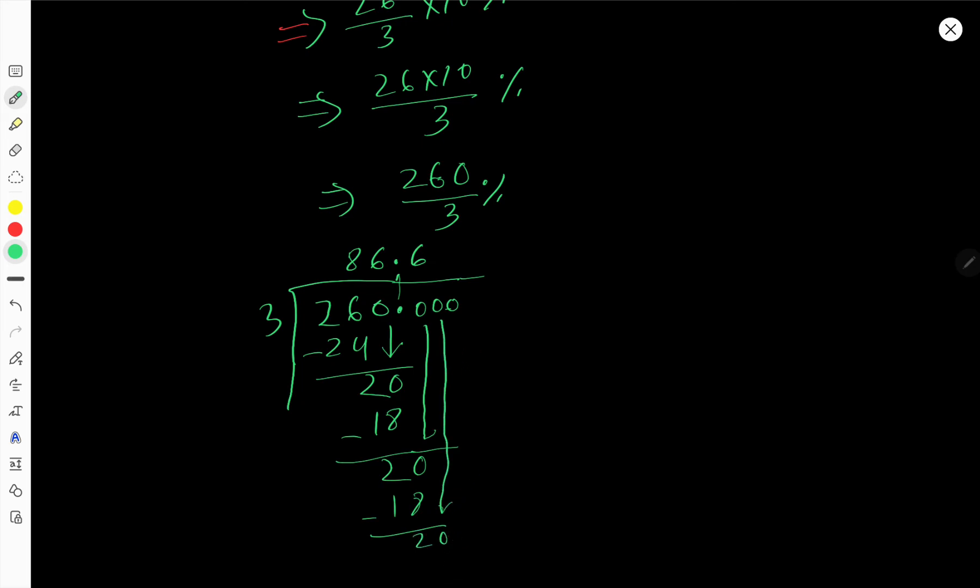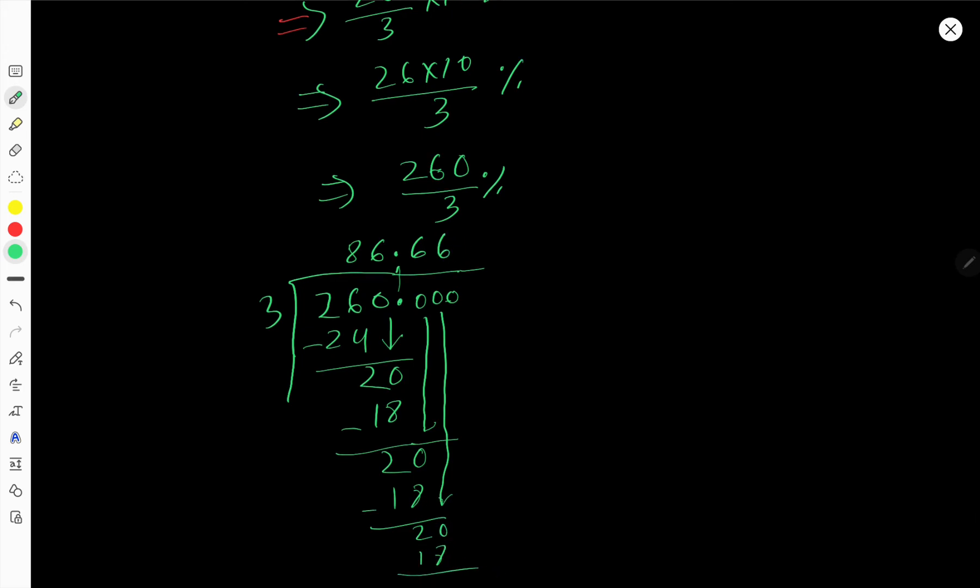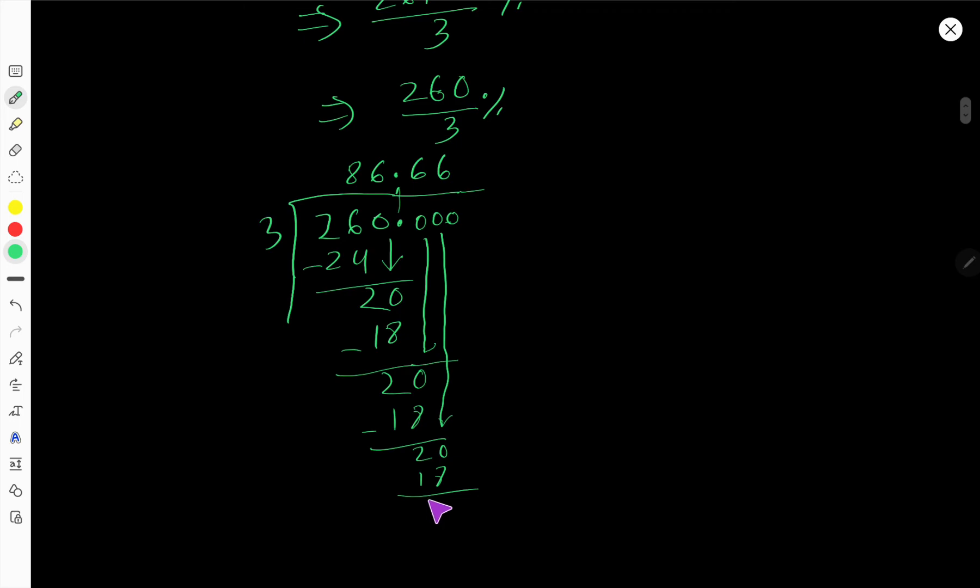20, 6 times is 18, subtract to get 2, bring down this 0.